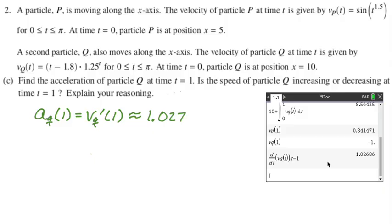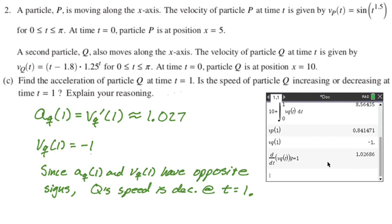And then we already know from the previous part, or you can find it again, that Vq is negative one. And since they have opposite signs, the speed is going to be decreasing. So I'm just going to jump to that. So since Aq of one and Vq of one have opposite signs, Q's speed is decreasing at t equals one. And that's what we would want to say.